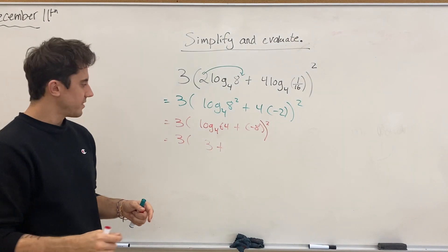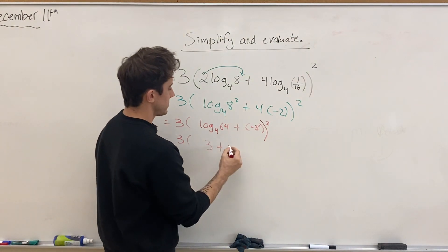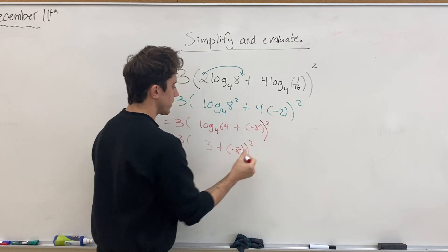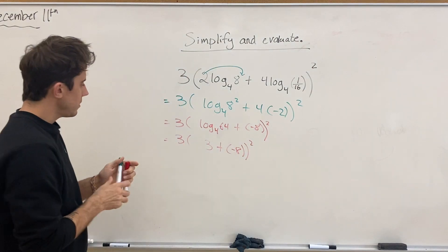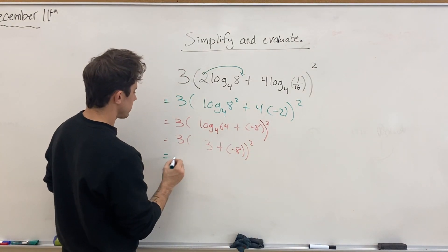let's not forget our bigger brackets above. 3 plus negative 8, all squared, right? And now, I'll change colors for contrast.